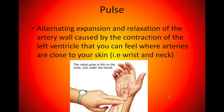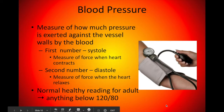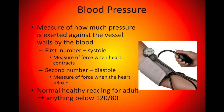To take your pulse: the pulse is the alternating expansion and relaxation of the artery wall caused by the contraction of the left ventricle. You can feel it where arteries are close to your skin, which is why we check our pulse at the wrist or neck. To take blood pressure, you measure how much pressure the blood exerts against the vessel walls. A normal healthy adult is usually at or below 120 over 80 — the first number is the systole and the second is the diastole.